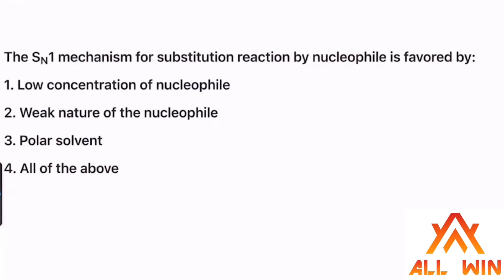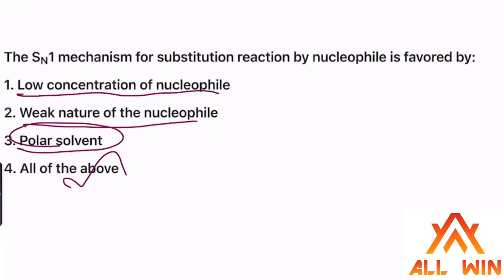The SN1 mechanism for substitution reaction by nucleophile is favoured when there is a low concentration nucleophile, a weak nucleophile, or a polar solvent. All of the above is the correct answer.